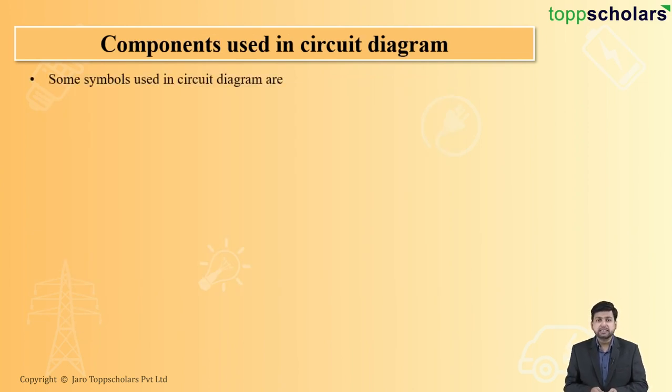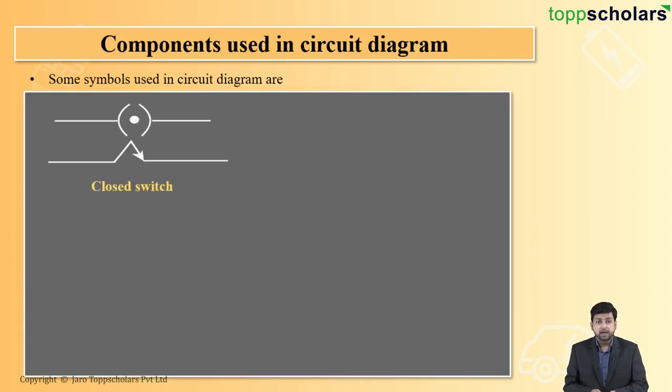So basically, there are symbols representing the circuit diagram. For example, if you see here, this is nothing but a closed switch. What I just told you, what is a closed switch? That the circuit is on.